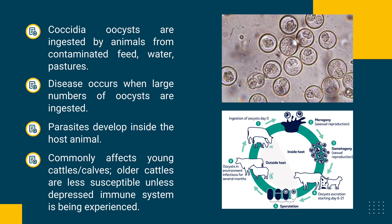Disease occurs when large numbers of oocysts are ingested. Parasites develop inside the host animal. It commonly affects young cattle or calves. Older cattle are less susceptible unless the host's immune system is being compromised.